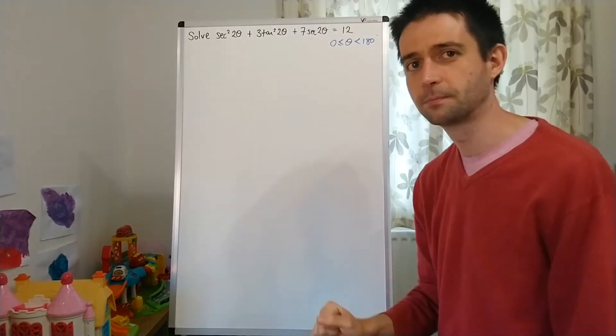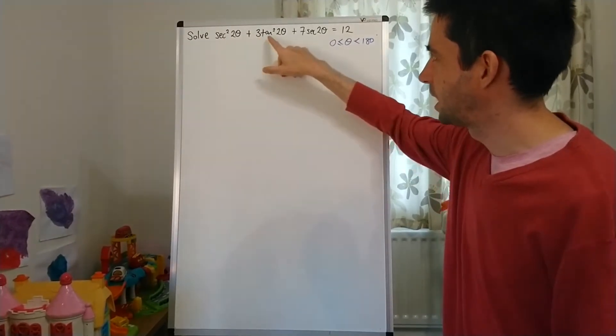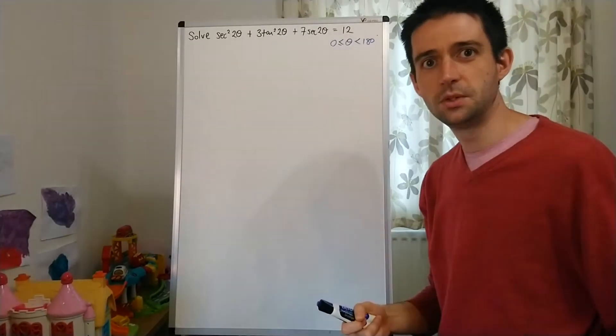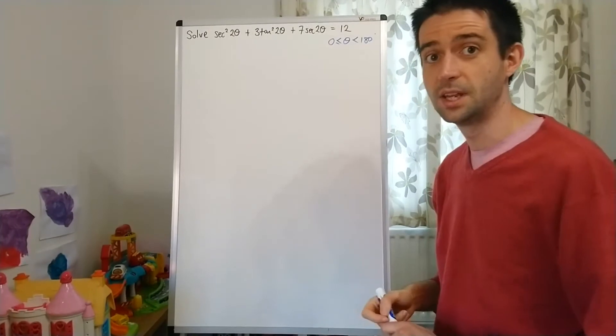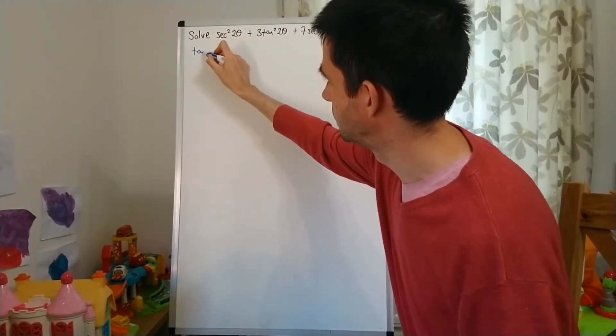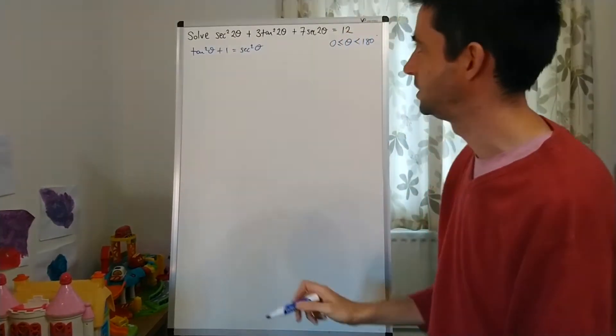We'll review that later. OK, so I've got sec²2θ and I've got tan²2θ. So we're thinking, OK, I'm probably using the first of those two identities I derived in the previous video, which is the identity tan²θ + 1 = sec²θ.